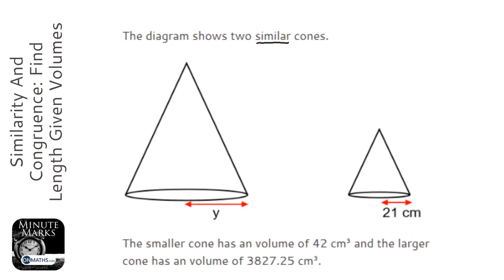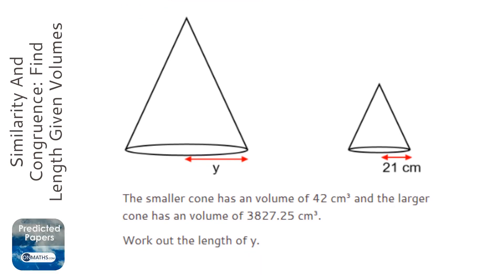Okay, so we're told that the cones are similar, which means one's an enlargement of the other. We're told that the volume of the smaller one is 42 and the big one is...